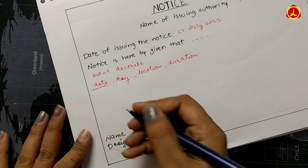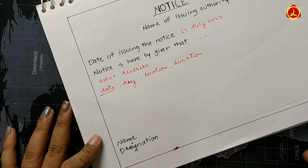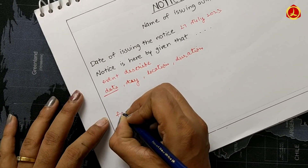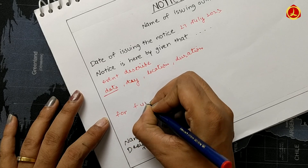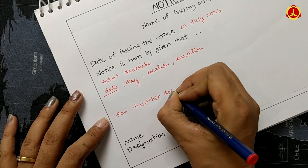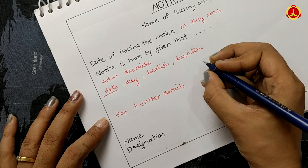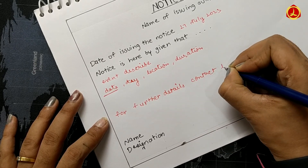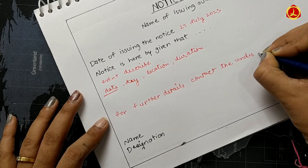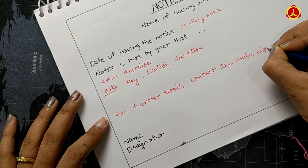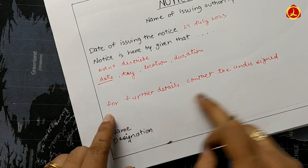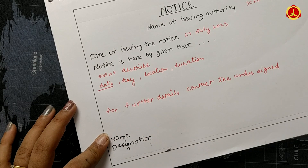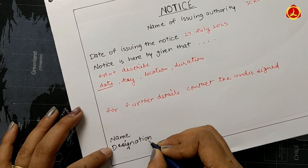The notice is written in passive voice. After that, add the common closing line: 'For further details, contact the undersigned.' This is another common line you should remember. Finally, end the notice with the name and designation of the issuing authority.